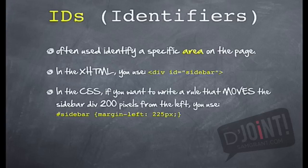In the CSS, you would write the rule and it would move the sidebar div 200 pixels from the left. If that's what you want it to do, you would have to write it this way. You would put in the symbol here, which is the numerical symbol, sidebar. Then you'd put in the appropriate declaration block, which here is margin left and then 225 pixels.